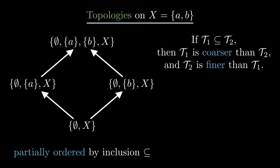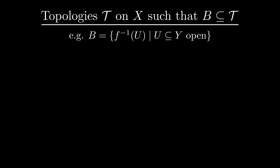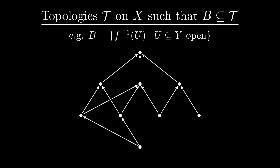Now let's consider all topologies on a set x which include a set b — this can for example be the set of all preimages of open sets, like in our initial problem. These topologies are once again partially ordered by inclusion. Here the maximal element is the discrete topology. We want to find a minimal topology, so a topology for which there are no coarser topologies.